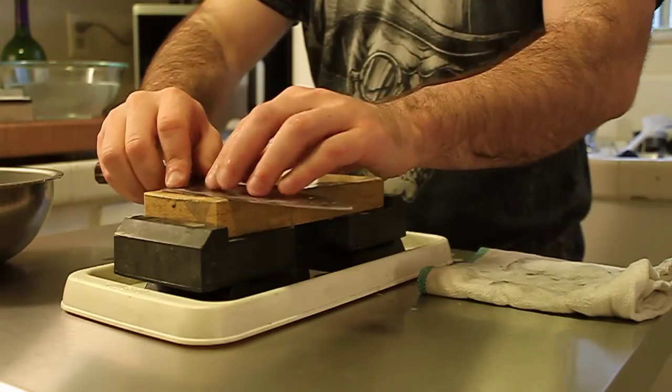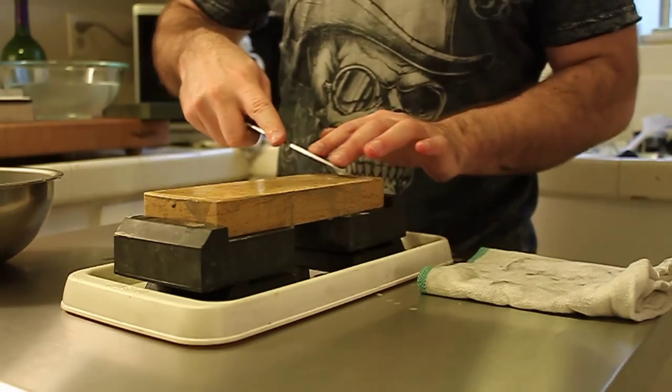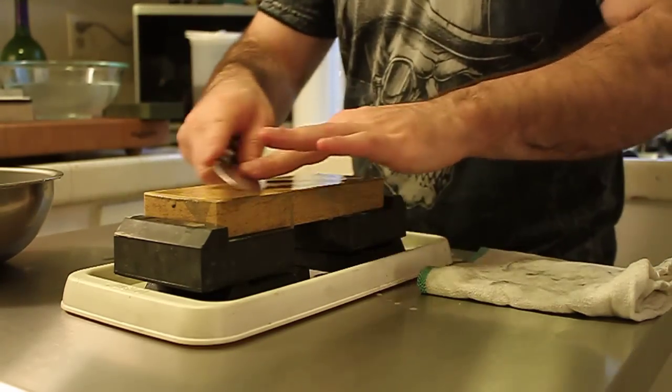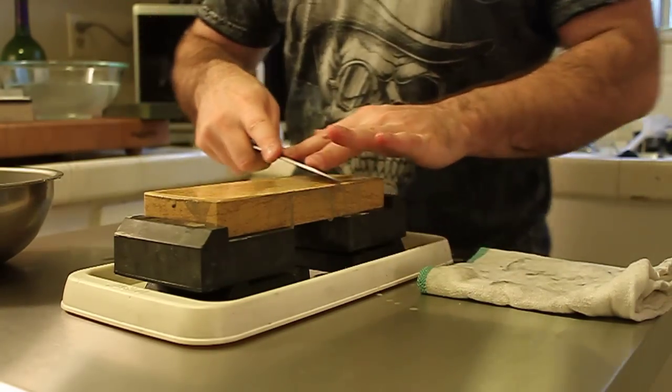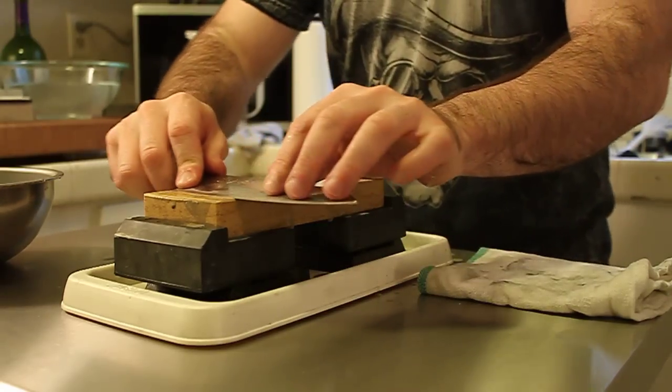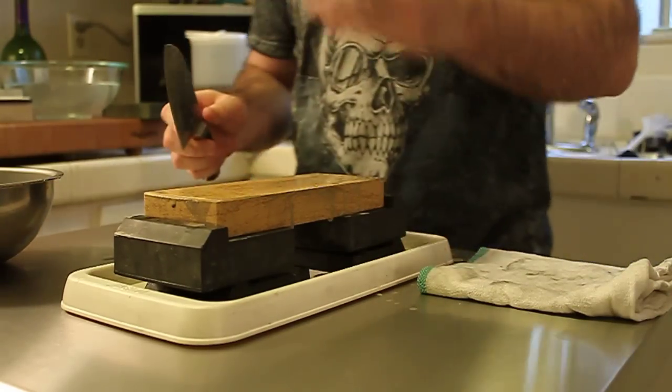So once you've kind of done your edge trailing stroke, you'll go through one more time and clean up your micro bevel once more. And then you can remove the burr.